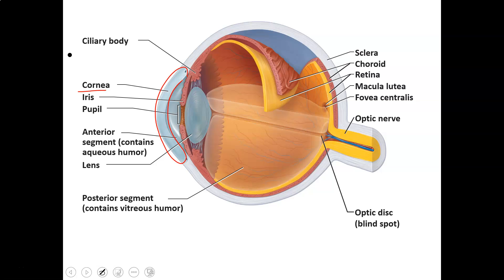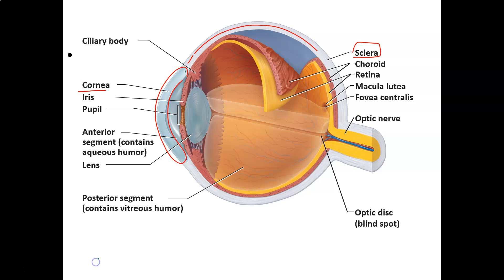The cornea is clear and avascular, meaning there are no blood vessels in it. Its job is to allow light to pass directly through it. The back part of the fibrous layer is the white of the eye, called the sclera. Both make up the fibrous layer, and the sclera's job is to help maintain the shape of the eye and protect it.